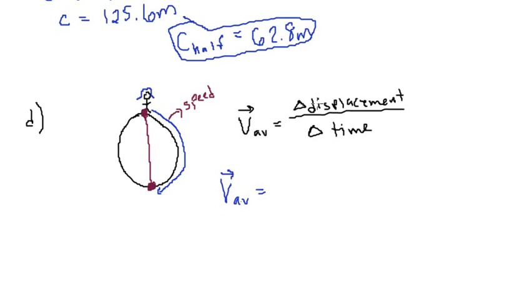So average velocity is the change in displacement. Okay, so x final minus x initial over t final minus t initial. Okay, so the initial position is zero because she started at zero. And the final position is right here. Okay, so the final position, this distance, is the diameter. The diameter of the circle we know is 40 meters. So the final distance is 40.